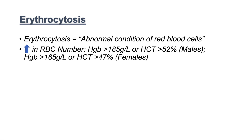To help remember, think of erythrocytosis as the opposite of anemia — it means too much red blood cell mass, too much hemoglobin, or too high a level of hematocrit.